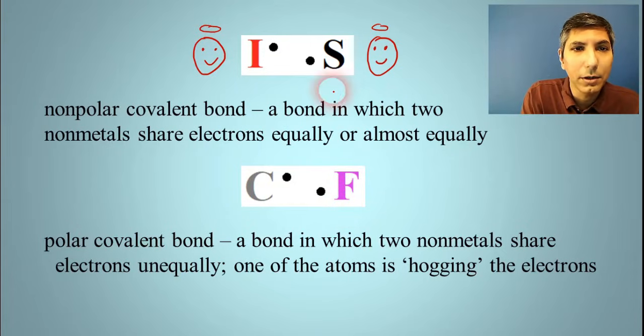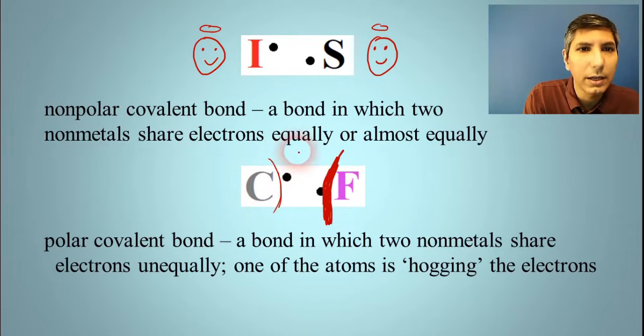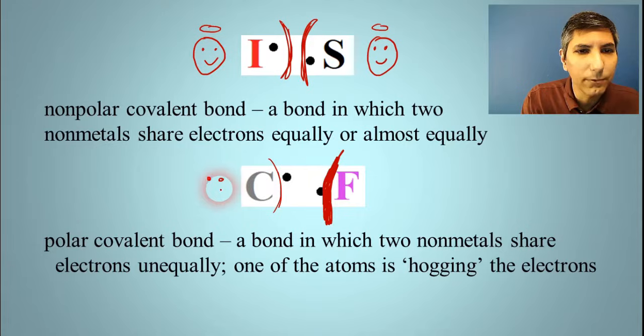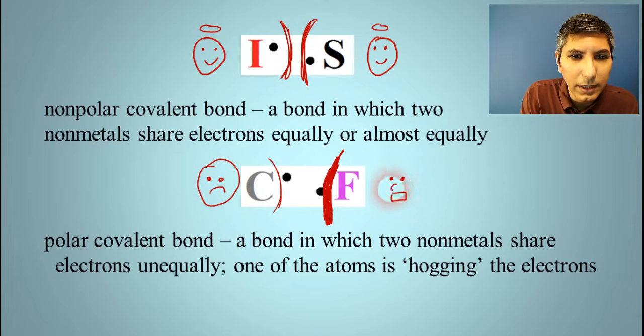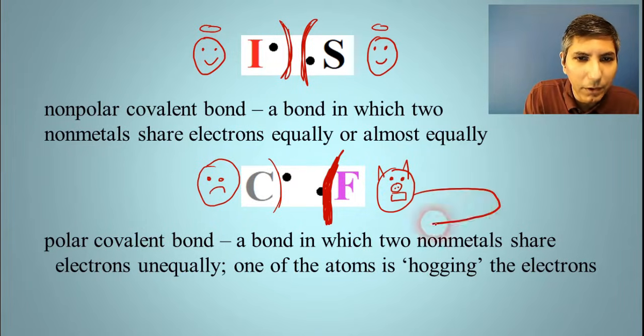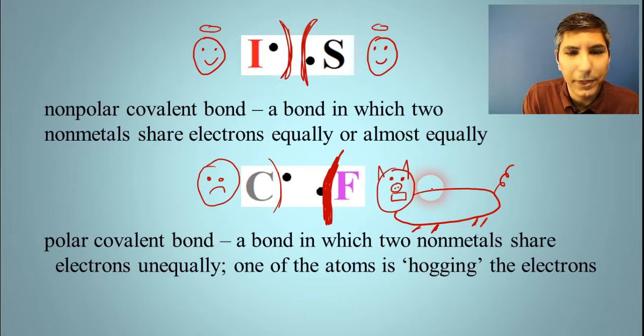On the other hand, we have this set down here, where fluorine is basically hogging the electrons and poor old carbon hardly gets to use those electrons. Whereas up here, it's pretty much a 50-50 split. Maybe 60-40, but it is pretty close to even. Now, because of the fact that fluorine is hogging the electrons, well, carbon is sad because it doesn't get to use the electrons. It thought it was going to be sharing. Whereas fluorine, well, I'm not very good at drawing these hogs here, but you can imagine we have some kind of electron hog here. And that's kind of what's going on. So fluorine is hogging the electrons. That's what happens in a polar covalent bond. One of the atoms is hogging the electrons.